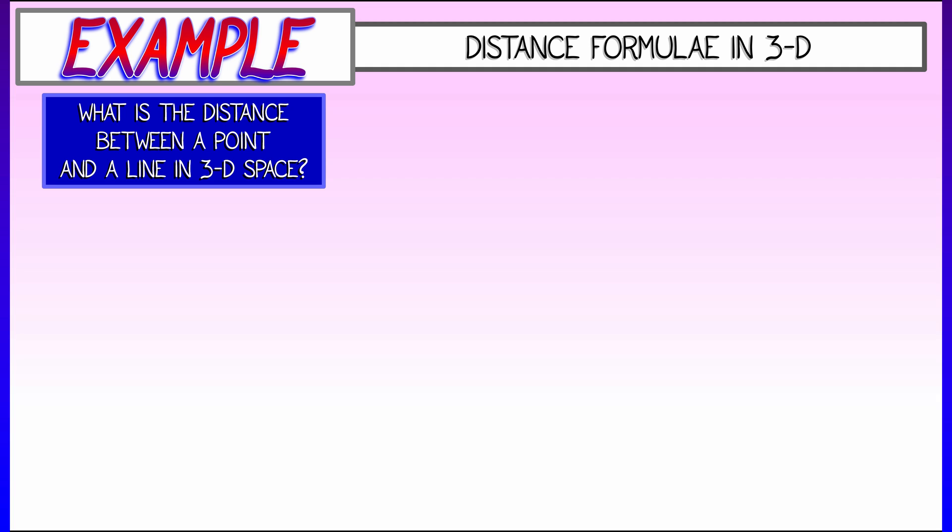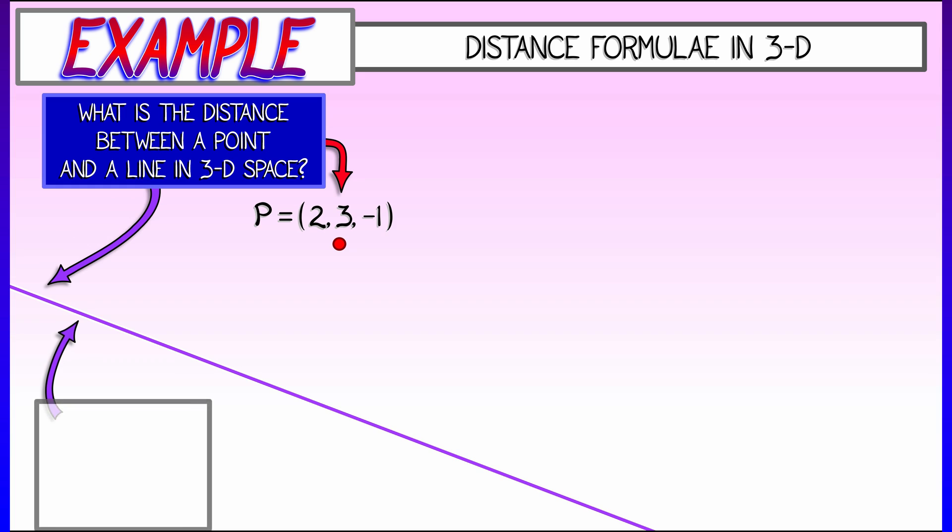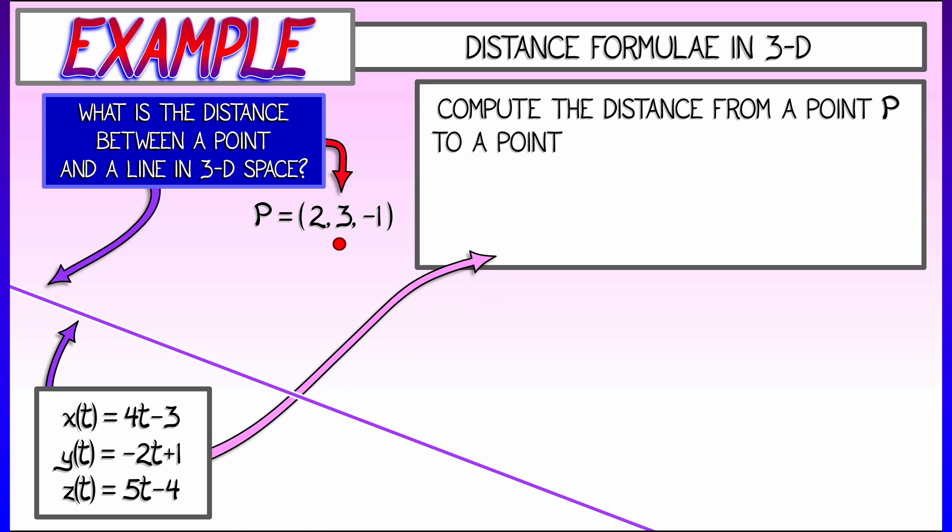This is maybe best seen in a couple of examples. Let's start off simple. What's the distance between a point and a line in three-dimensional space? So let's say that we have a point P. Maybe it's got coordinates two, three, negative one. And then I have some line that is given in a parametrized form. So I tell you what the x-coordinate, the y-coordinate, the z-coordinate is as a function of my parameter t. Maybe think of it as time.